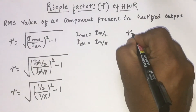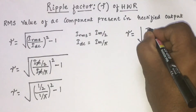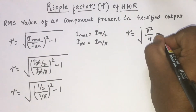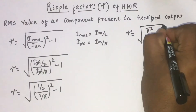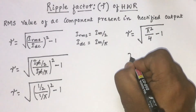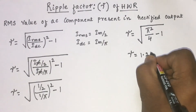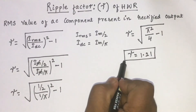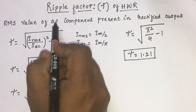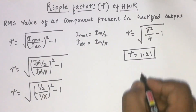Ripple factor is equal to square root of (π² divided by 4 minus 1). If we simplify this equation, we will get ripple factor is equal to 1.21. This is the value of ripple factor of a half wave rectifier, and this is the amount of AC component which is present in the rectified output.